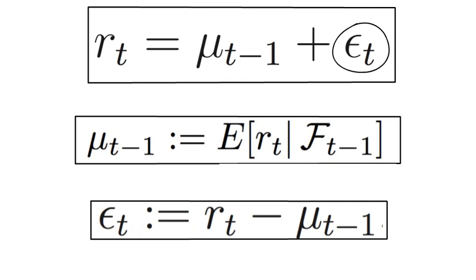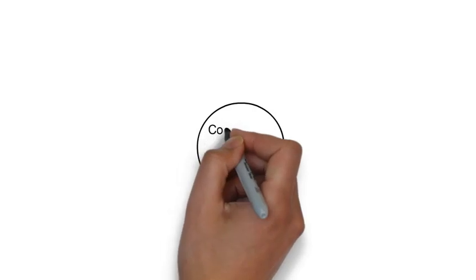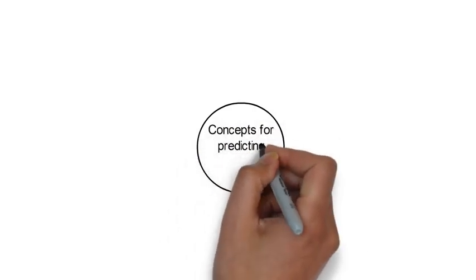And as returns are not perfectly predictable, epsilon t will not be zero. Now second, in this course, we are going to learn different concepts for how to predict returns.